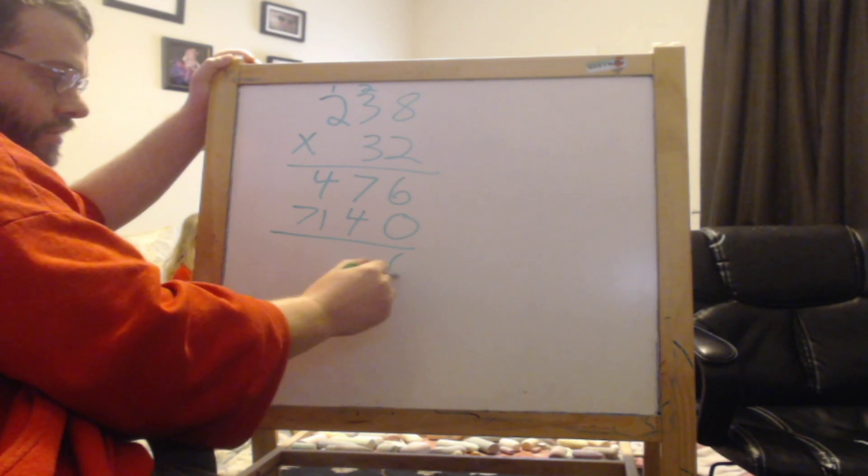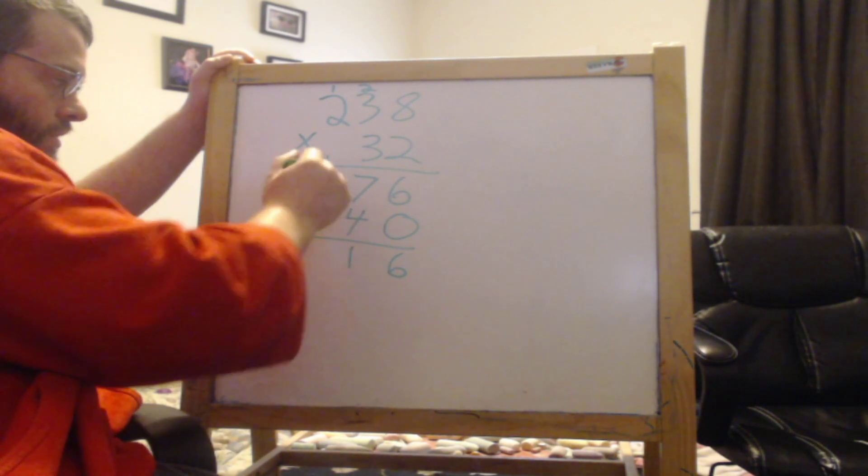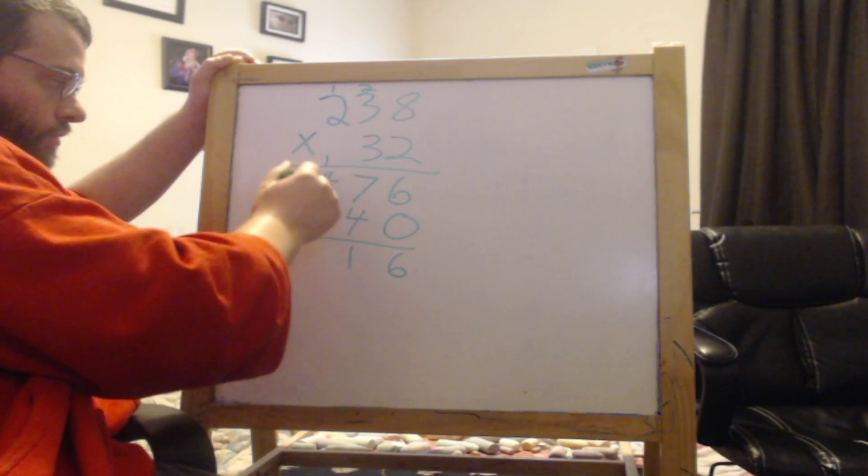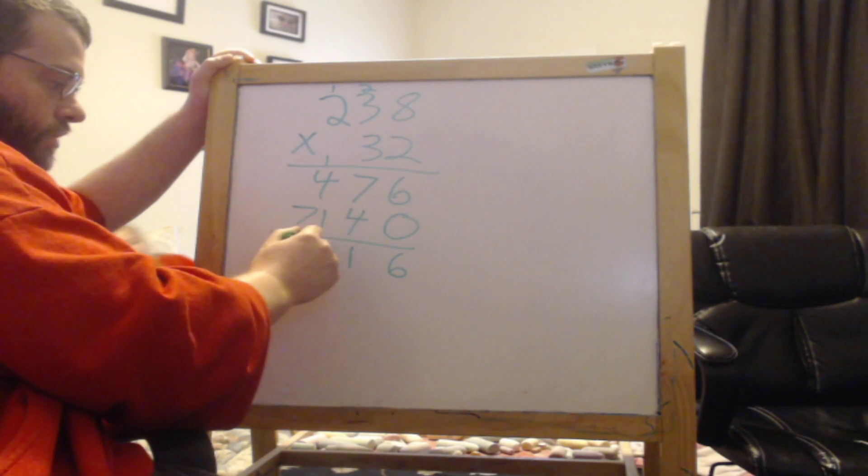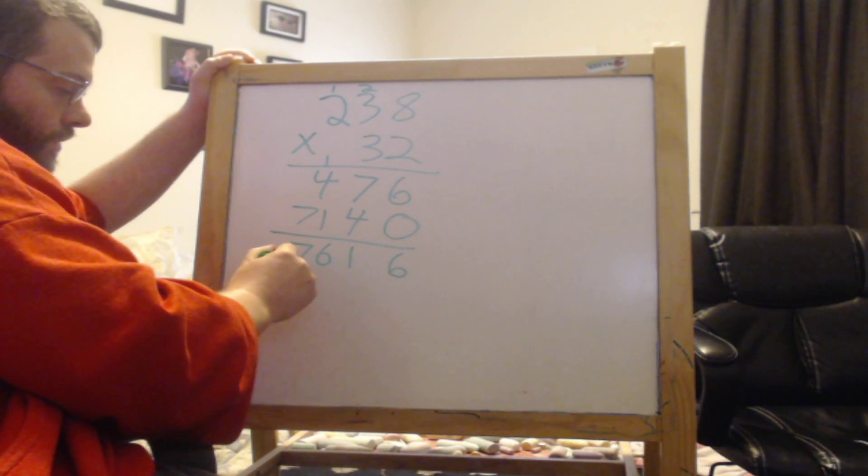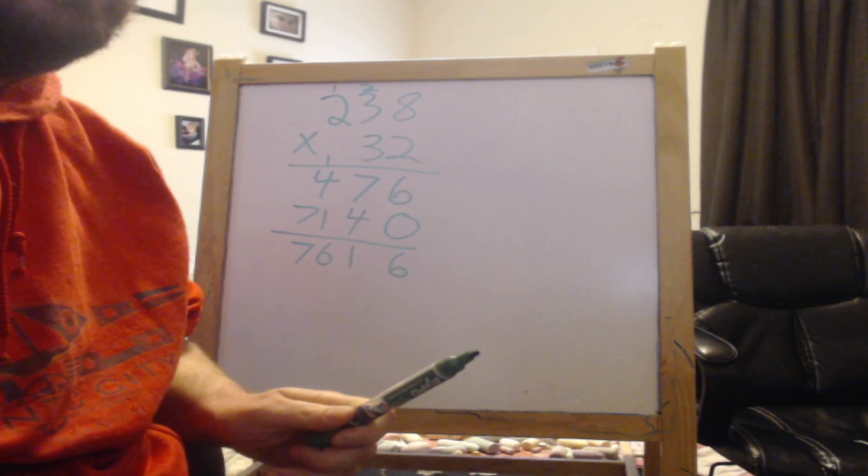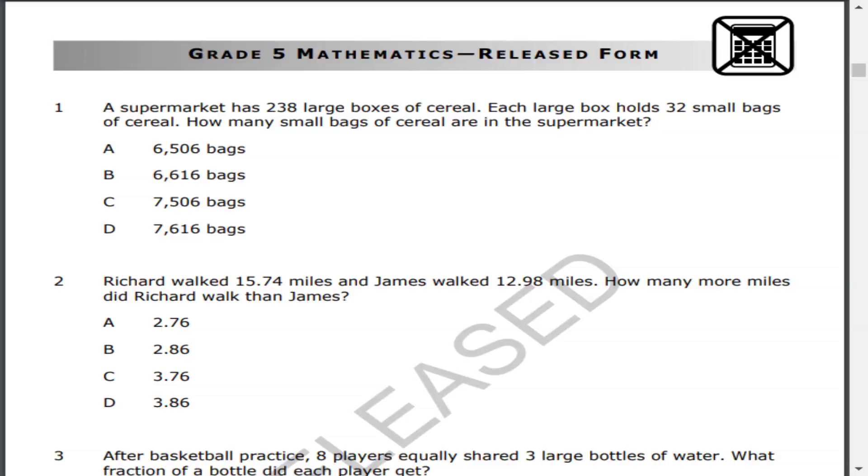Now we add: 6, 11. 1 plus 4 is 5, plus 1 is 6, 7. So let's go back to our answers and see. All right. So we got 7,616 bags. That would be D.